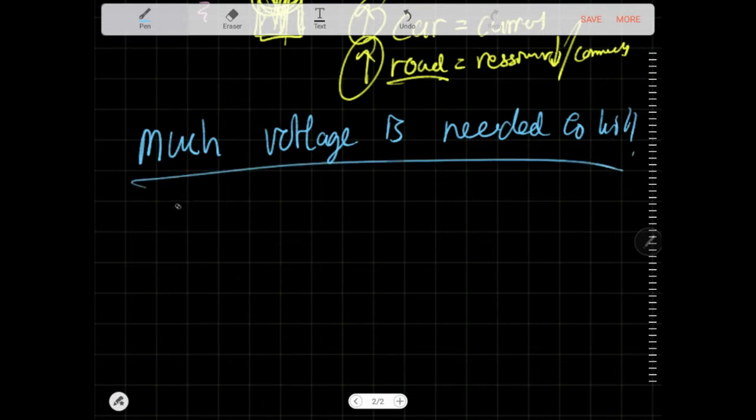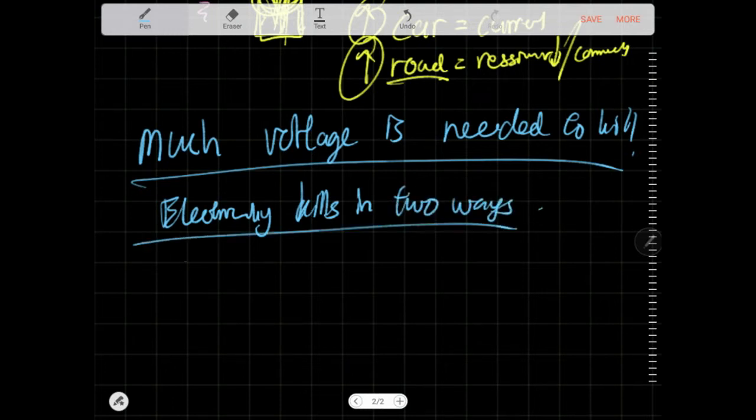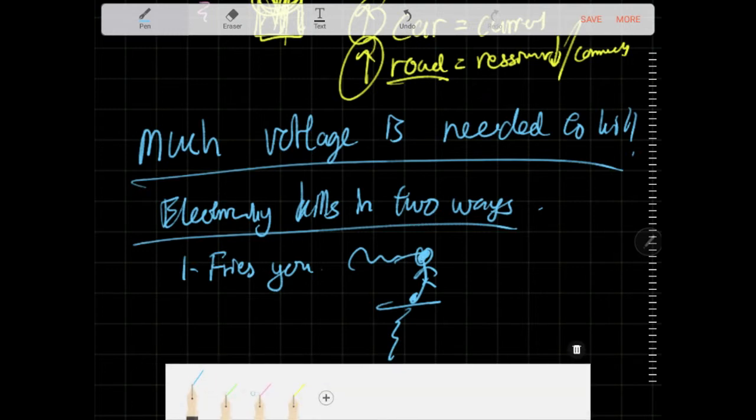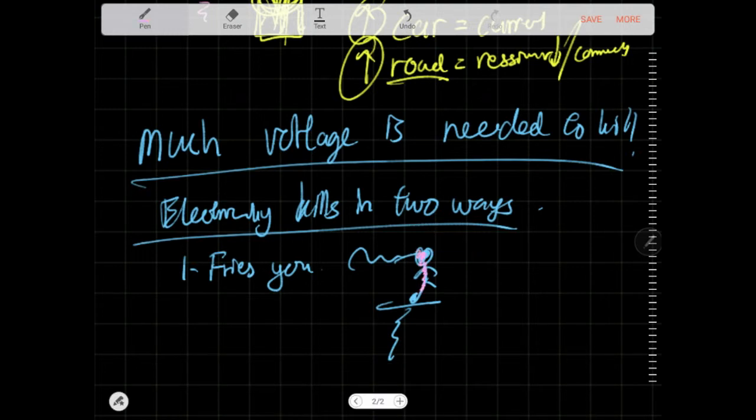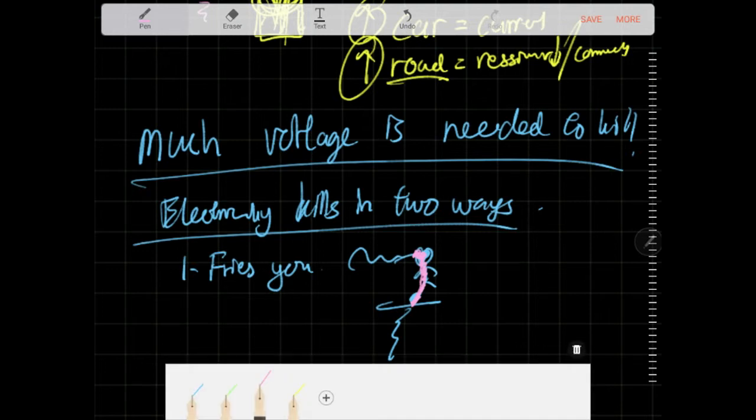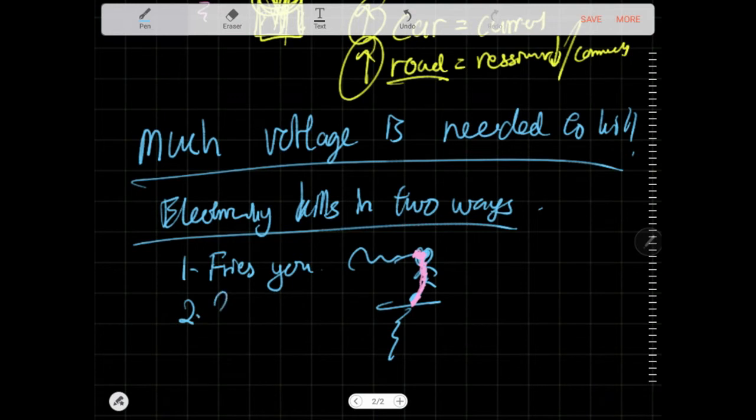I also want to address a little myth, which is: how much voltage is needed to kill? Electricity kills in two ways. One, basically it fries you. The current just passes through your body, hits your body, goes to the ground, gets discharged. And basically wherever the current passes through you, they all just heat up and get fried. You're basically cooked. Skin is dead, your meat is cooked, and then you rot away. That's how you die. You die a painful death in the hospital.